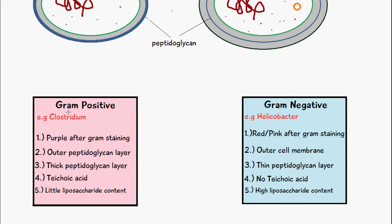An example of gram positive bacteria is Clostridium. An example of gram negative bacteria is Helicobacter.